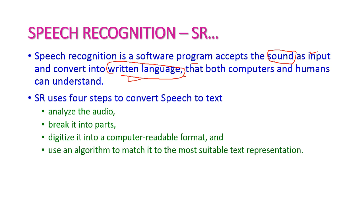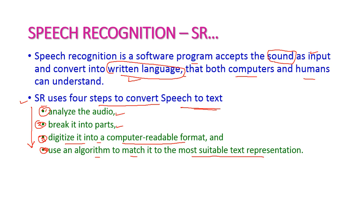The text can be understood by both computer and human. The system uses four steps to convert speech to text: first, analyze the audio; second, break into parts; third, digitize into a computer-readable format; and fourth, use an algorithm to match to the most suitable text representation. The broken parts are converted into computer language and then the algorithm maps to the most suitable text representation.